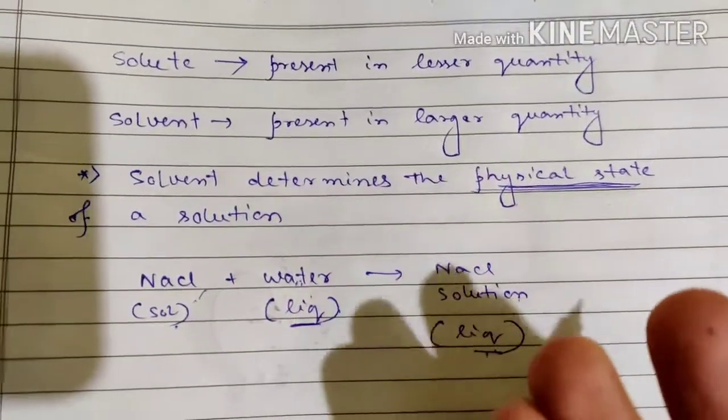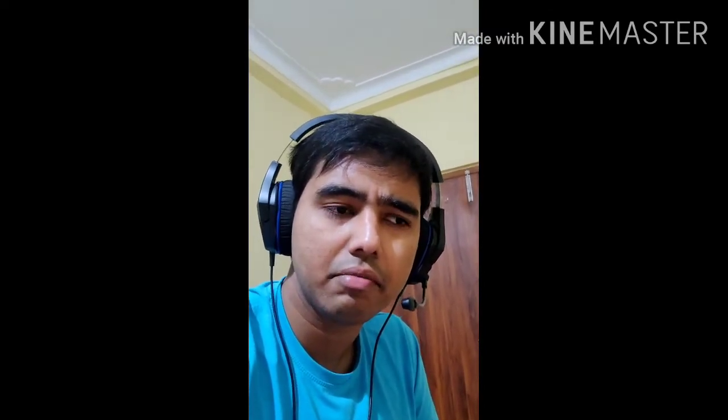After defining the solution and types of solution, we must understand how to express the concentration of a solution. Concentration refers to the amount of solute dissolved in a solution. Mathematically, there are various ways to express it: mass percentage, parts per million (ppm), molarity, molality, and mole fraction — terms you are likely already aware of.